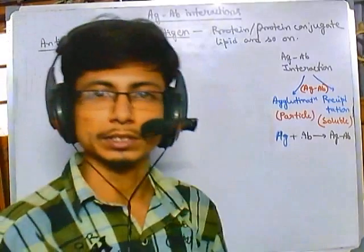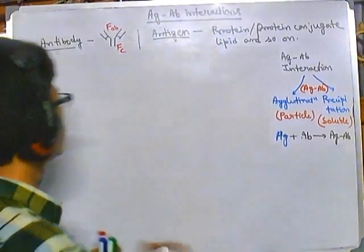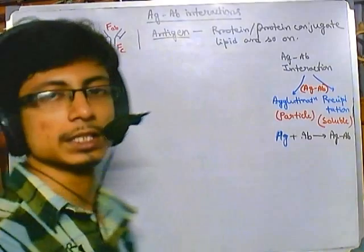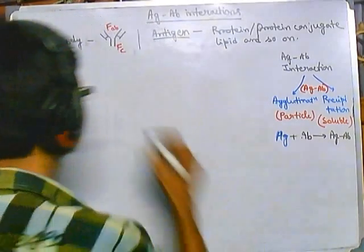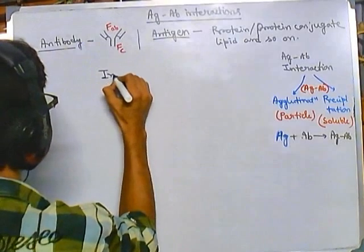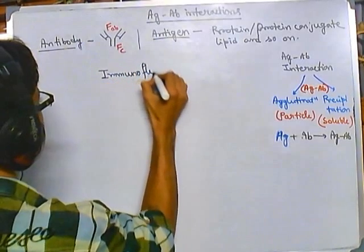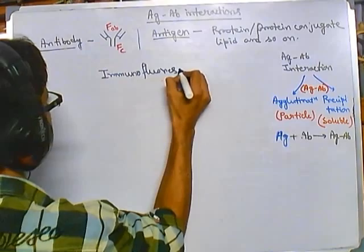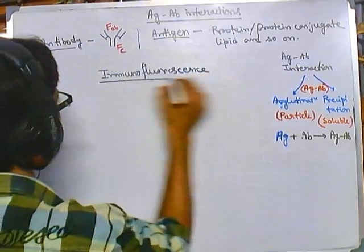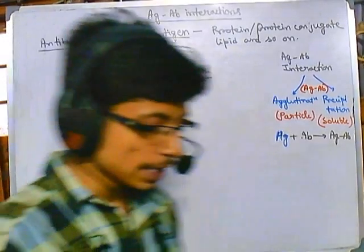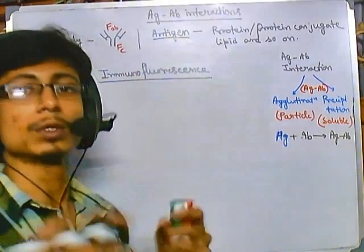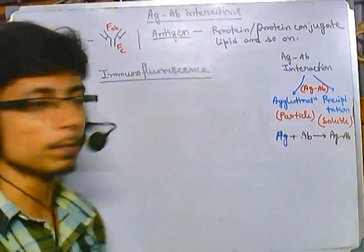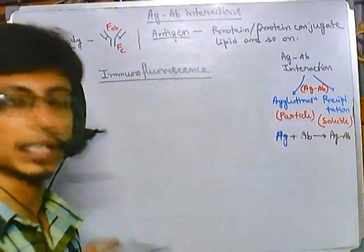Welcome back friends. In this video we are talking about antigen-antibody interactions, and particularly we will be talking about how to measure the amount of antigen or antibody present in a sample using fluorescence detection technique. It is called immunofluorescence detection techniques. As the term suggests, it is about the immunological system — the immune complex, which is the antigen-antibody complex — and we will be using fluorescence for detection.